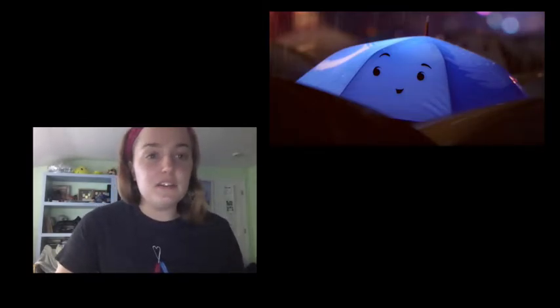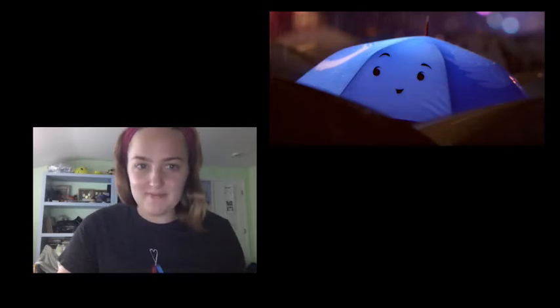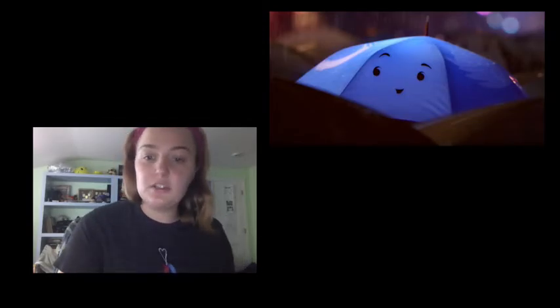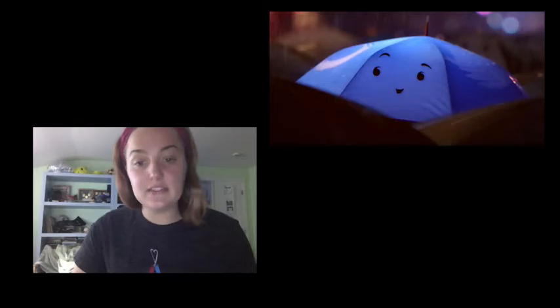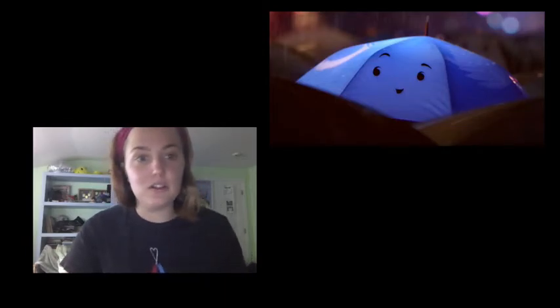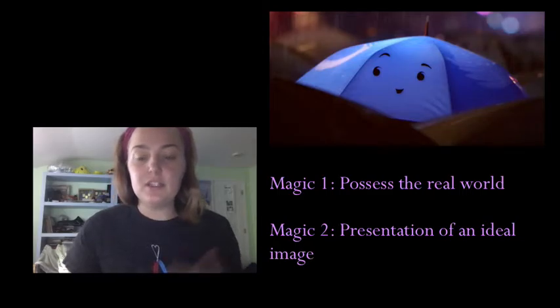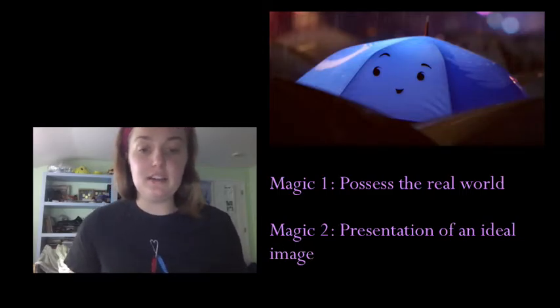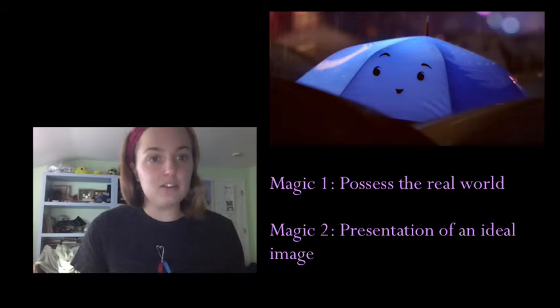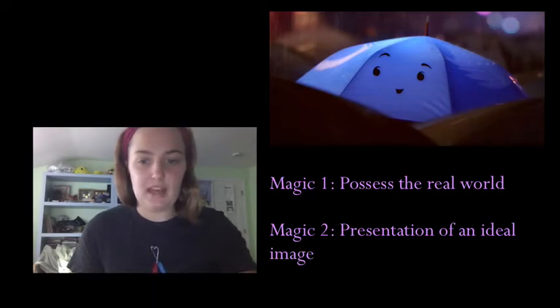It is Perkins' quote: The movie offers two forms of magic. The first, on which the realist theory concentrates, gives it the power to possess the real world by capturing its appearance. The second, focus of the traditional aesthetic, permits the presentation of an ideal image ordered by the filmmaker's will and imagination.